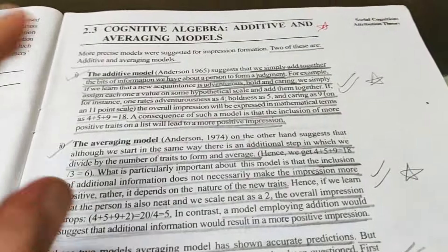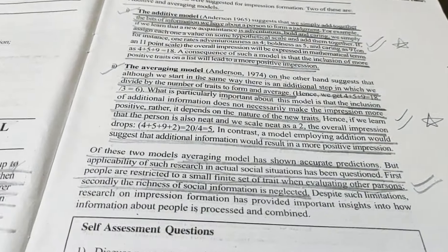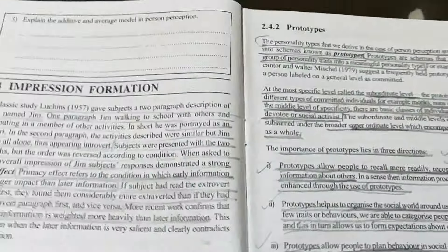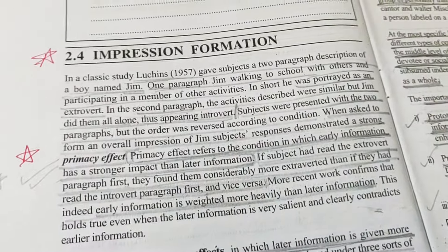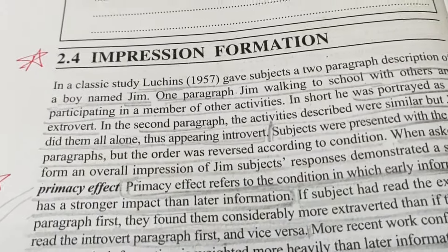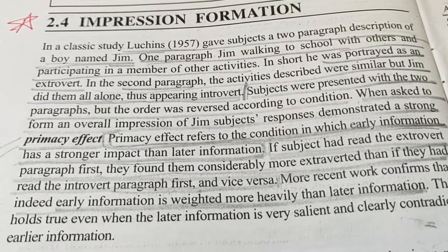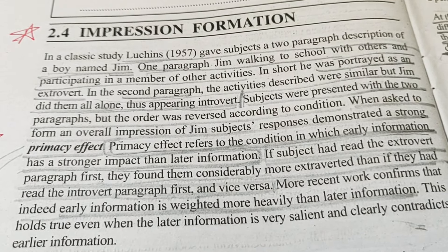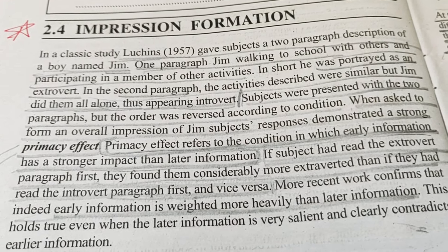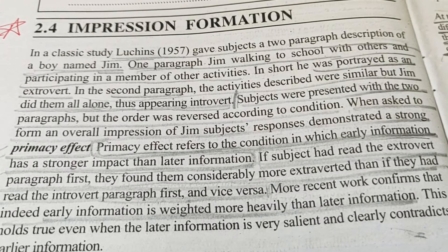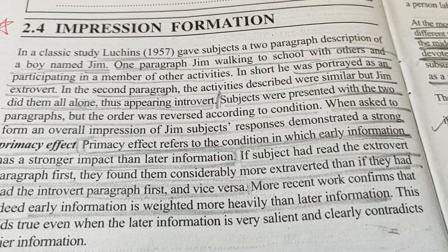Both models are important — they carry stars and can be prepared for exams. Moving to Impression Formation: Luchins did an experiment in 1957. He told subjects about a girl named Jim and wrote two paragraphs about her. In the first paragraph, she went to school and was talking with friends — her portrayal was extroverted.